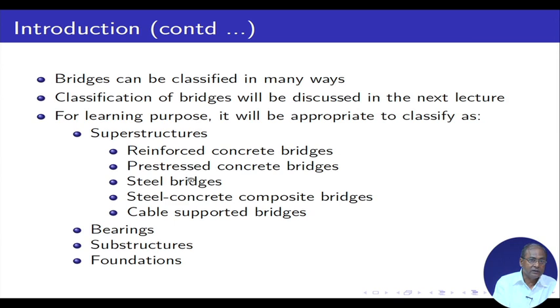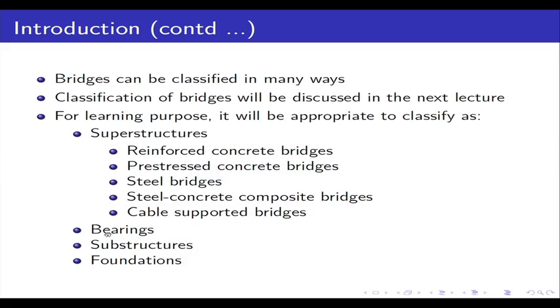This is called the superstructure. Whatever load it carries — vehicles, pedestrians, rails — all those loads have to be finally transferred to the ground. That is the basic philosophy of design. So we require substructures and foundations. Bearings are shown above the substructure where the load will come, and that load will be finally transferred to the substructure and then to the foundation.